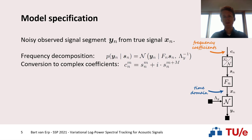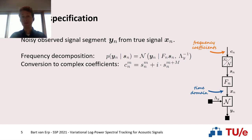It is important to note that because s(n) is Gaussian distributed, our new random vector c(n) is distributed according to a complex normal distribution. We can visualize this also in the vector graph. And now we can see that our time domain observed signal y(n) can be extracted from our complex frequency coefficients through a probabilistic model.